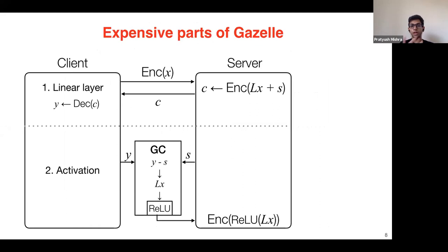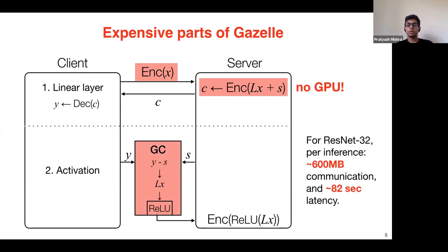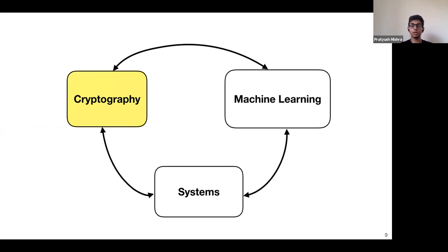Gazelle spends a lot of time optimizing its components and it's a great improvement over prior work, but the components are still quite heavy. Because of reliance on LHE, Gazelle can't take advantage of standard hardware acceleration techniques such as GPU evaluation. The garbled circuits are also expensive. Together, for a moderately deep network like ResNet-32, each inference takes 600 megabytes of communication and 82 seconds to complete in the online phase alone, with a separate expensive preprocessing phase.